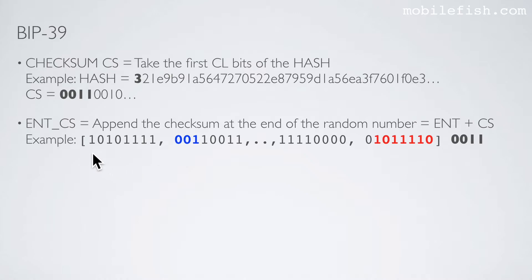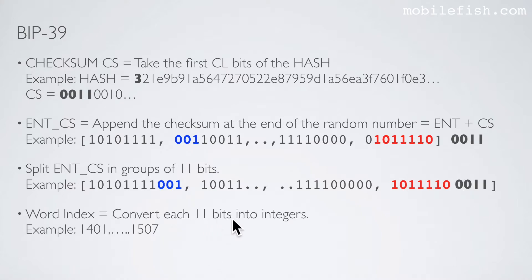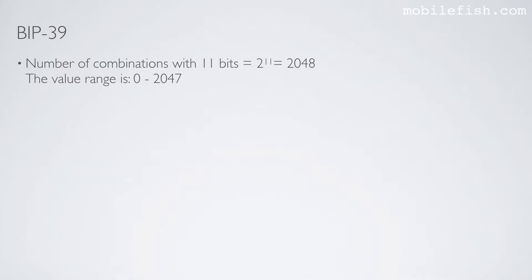Next we split the value of the variable ENT_CS into groups of 11 bits. So here are 8 bits and we take 3 bits to form a group of 11 bits, and we do the same for all the other bytes. At the end we have 4 bits plus 7 bits which forms a group of 11 bits. Next we convert each 11-bit group into an integer. If we convert this binary value into an integer it is 1401, and if we convert this binary value into an integer it is 1507. Each integer value is a word index. The number of combinations with 11 bits is 2 to the power of 11, which is 2048, with a value range of 0 to 2047.